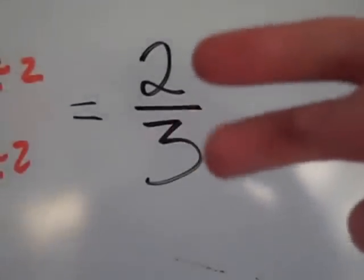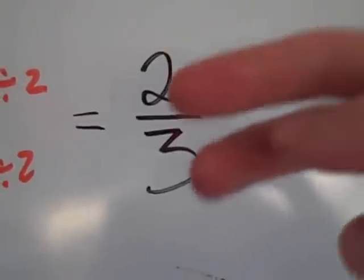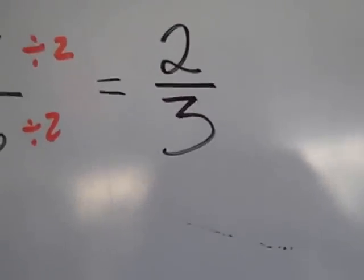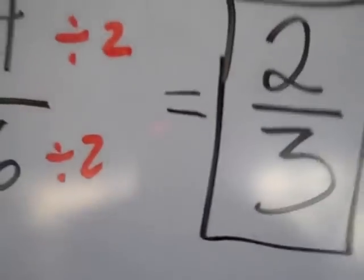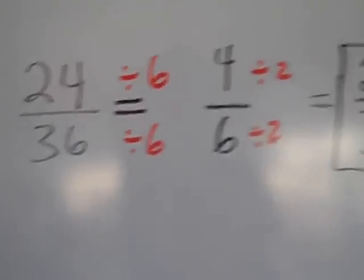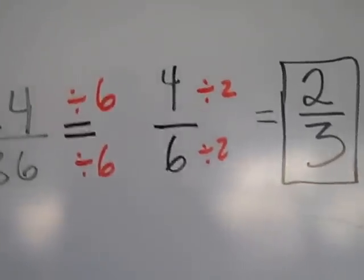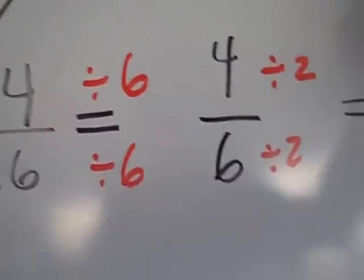Now 2 and 3 are both prime numbers. They don't have any common factors except for 1, and that is the simplest form of the fraction, 24/36.